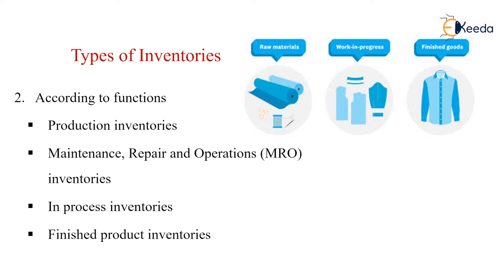In these cases, the inventory is dependent upon the function. We are having the production inventory, maintenance repair and operations inventories where alterations in the sizes are generally being done in the textile or garment industries, in-process inventories at each stage in between raw materials to finished goods. If there are some inventories then it is called as work-in-progress inventories, and finally the finished product inventory. So these are the types of inventories. Thank you.